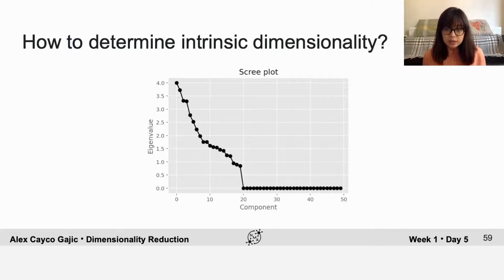So in this case, the extrinsic dimensionality is 50 and the intrinsic dimensionality is 20. That's because the 20th through 50th components have no variation in the data.